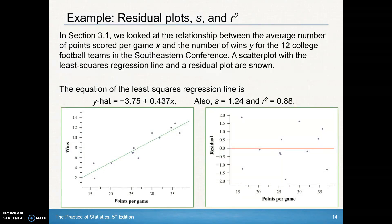Here's an example. In section 3.1, we looked at the relationship between the average number of points scored per game and the number of wins. There was a strong, positive, linear correlation, which makes sense. The more points per game you score, the more wins you should probably have.